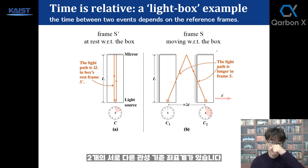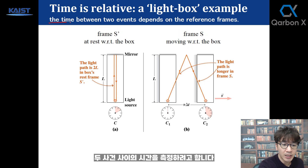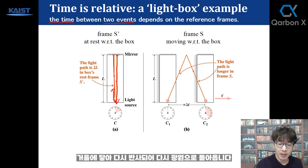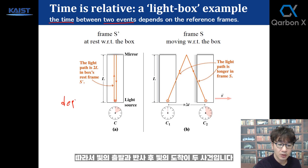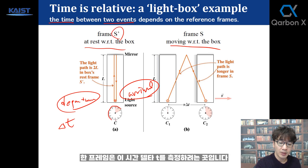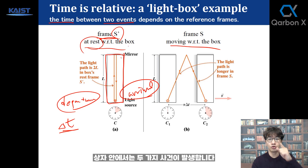Frame S prime is at rest with respect to the box. We're trying to measure the time between two events. The light source emits light, it hits the mirror, reflects back, and comes back to the light source. So the departure of the light and the arrival of the light after reflection are the two events. We want to measure the time delta T between these two events in two different reference frames. The clock's reference frame is at rest with respect to the box, and the two events occur inside the box.